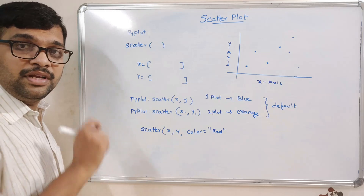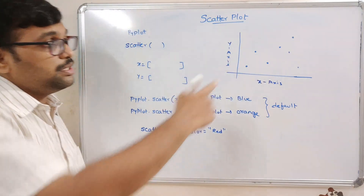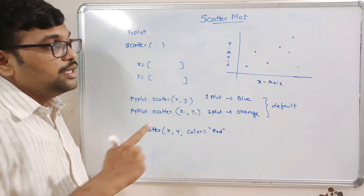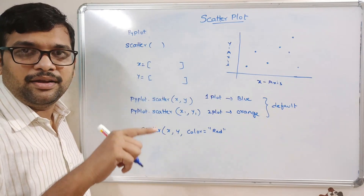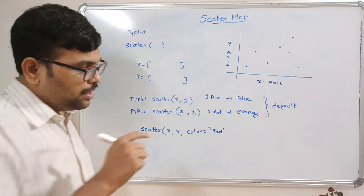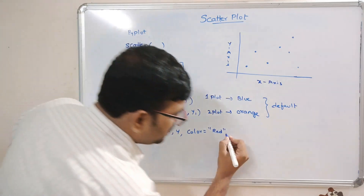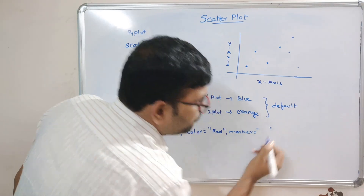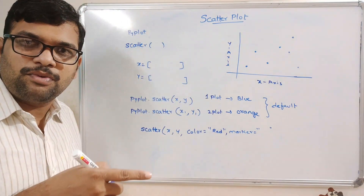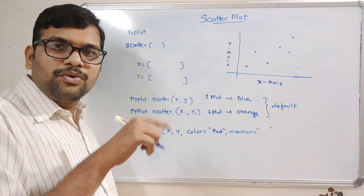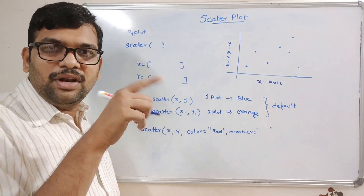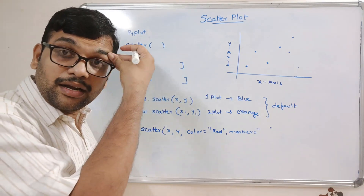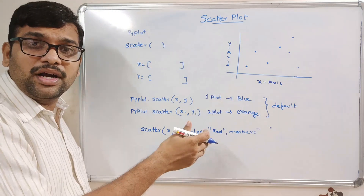We can also change the marker. By default the marker is a point. We can change it using the marker attribute. If you give 's' it will be a square, if you give 'o' it will be a circle, if you give a star it will represent as a star, and if you give the caret symbol it will represent as a triangle.